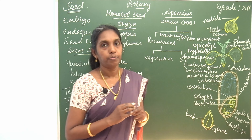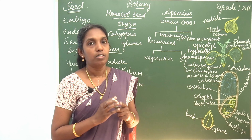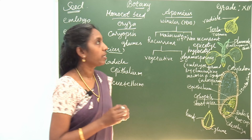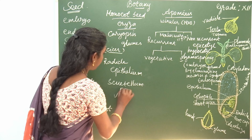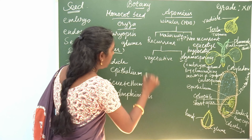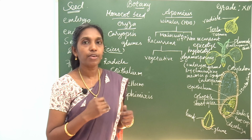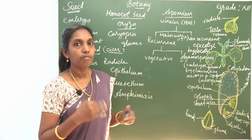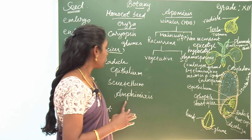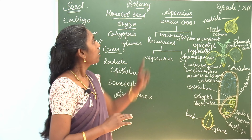Another topic is apomixis. The normal fertilization process is called amphimixis. Amphimixis is the development of seed after fertilization — the fusion of male and female gametes — and finally, after post-fertilization changes, the formation of seed. That process in a normal flowering plant is called amphimixis.